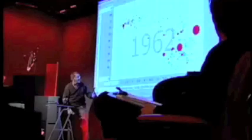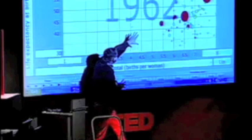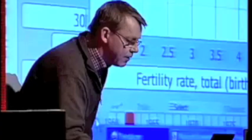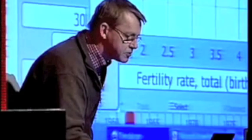And 1962, there was really a group of countries here that was industrialized countries. And they had small families and long lives. And these were the developing countries. They had large families and they had relatively short lives. Now, what has happened since 1962? We want to see the change. Are the students right?